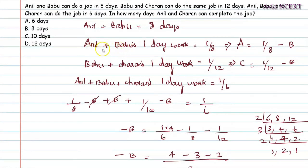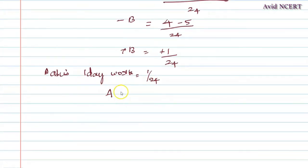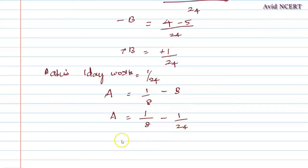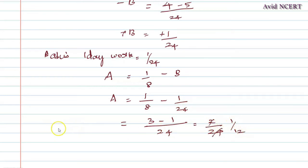Now substituting the value of Babu's one-day work into the first equation, we can find Anil's one-day work: A equals 1/8 minus B. Substituting B = 1/24, A equals 1/8 minus 1/24. With LCM 24, this is 3 minus 1 = 2, divided by 24, which simplifies to 1/12. So Anil's one-day work is 1/12.